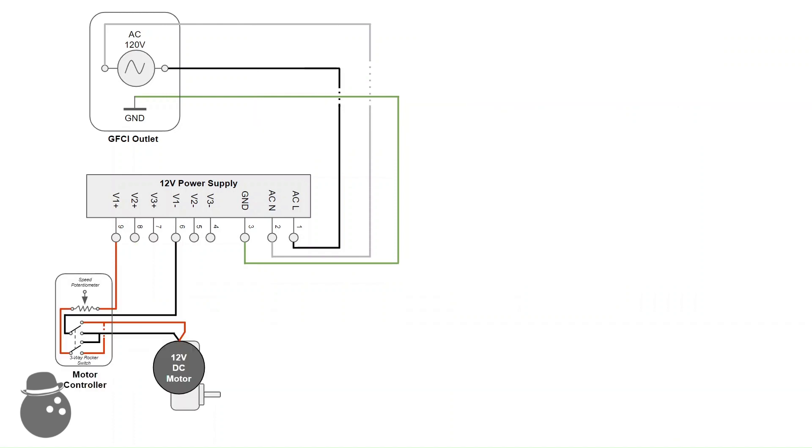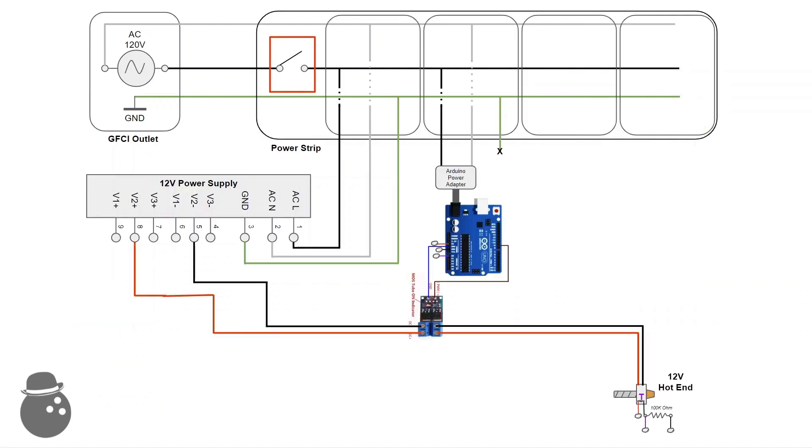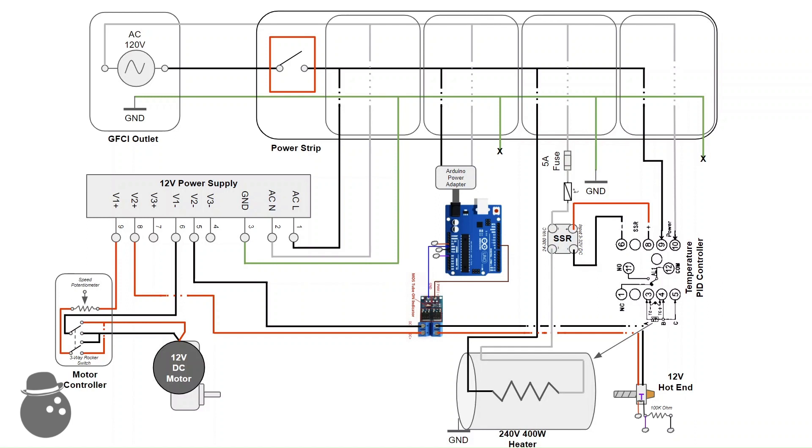So now that I have a DC motor with variable control, a heating circuit, and a hotend, when I jam it all together, I feel like I'm missing something. Ah yes, the mechanical bits to actually handle the molten plastic.